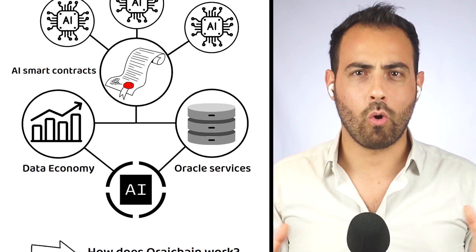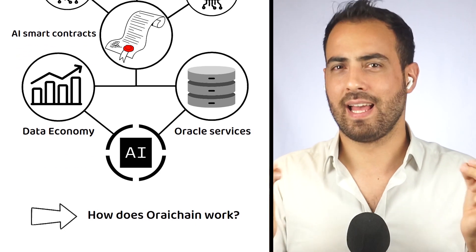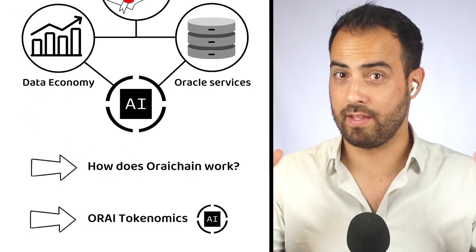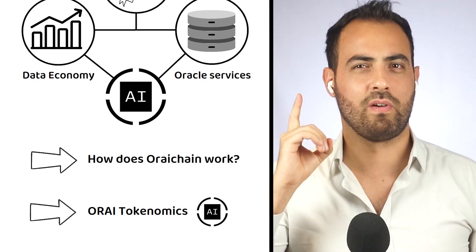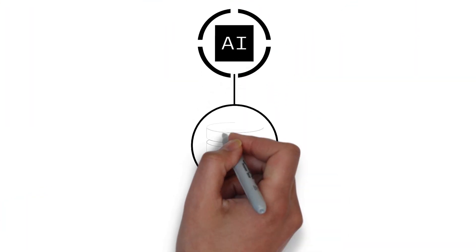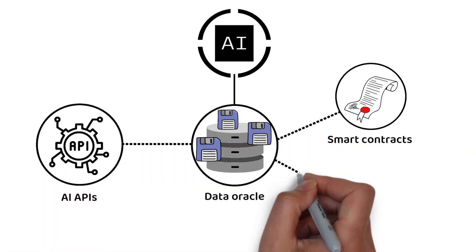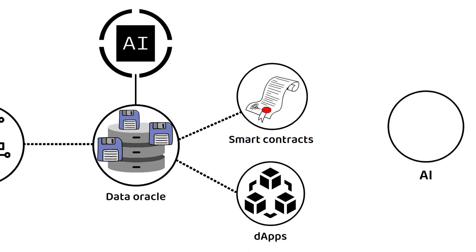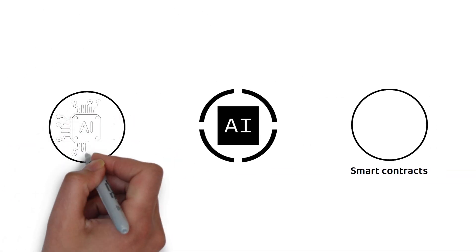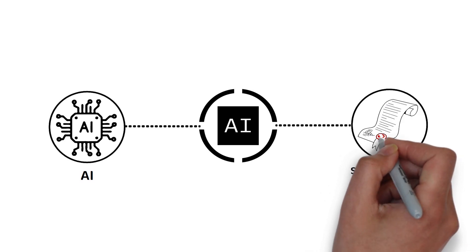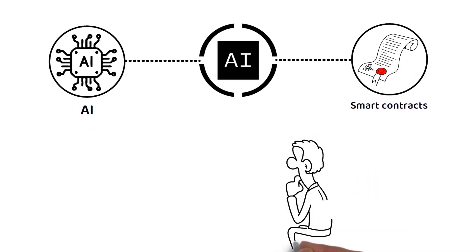But how does Ori Chain work exactly and what are the tokenomics of the Ori token? Today we find out. Ori Chain is a data oracle that links AI APIs to smart contracts and decentralized applications. Essentially, Ori Chain acts as the bridge between AI and smart contracts, enabling users to create various AI data requests.